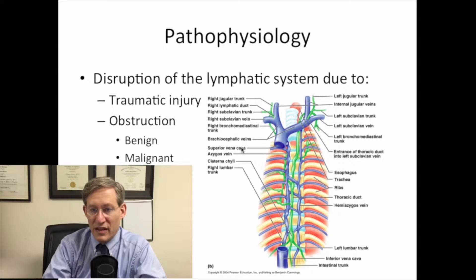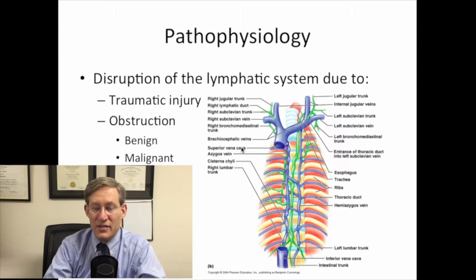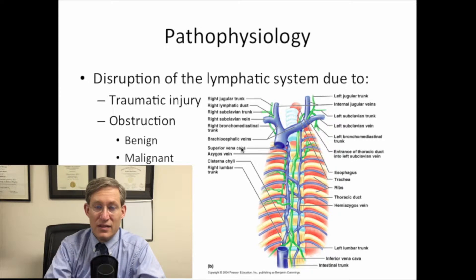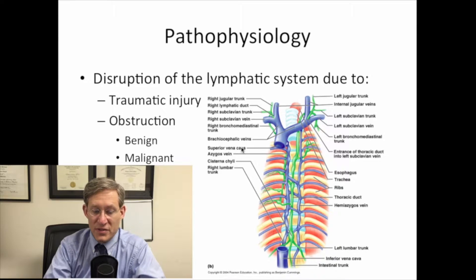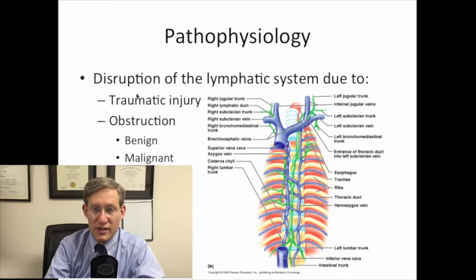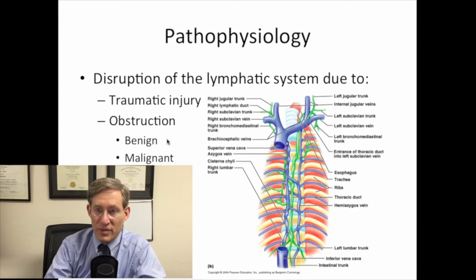Something has either injured or is blocking the lymphatic flow, causing leakage of what should normally be inside the lymph vessels — the cisterna chyli — into the peritoneal space. We're talking about either traumatic injury or obstruction, which can be benign or malignant.